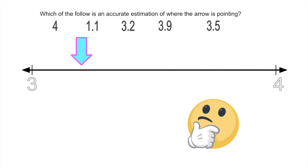Which of the following is an accurate estimation of where the arrow is pointing? We want to know — or at least which one of these is most likely where the arrow is pointing? Let's start off by eliminating the ones we know are wrong. I can tell you right now, four is wrong. You know how I know four is wrong? Because it's right there — I already know where four is on the number line. It's definitely not here. We're not going to say this is three, then four, and then four again — that doesn't make sense.